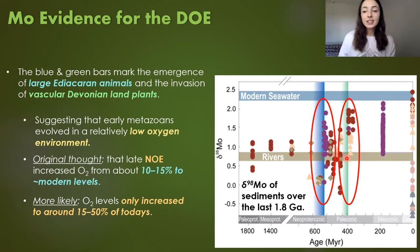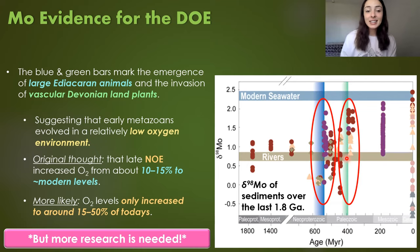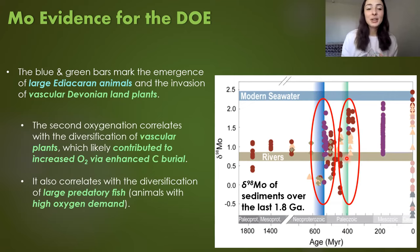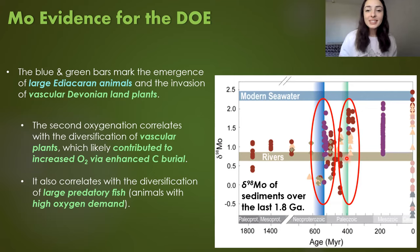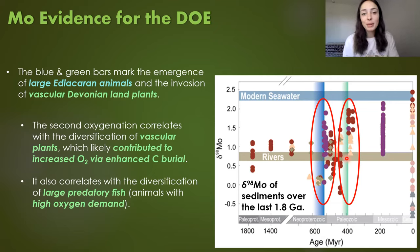This could be significant in studying those animals' functions and evolutionary history compared to animals that evolved post-Devonian oxygenation. More research is needed to understand the exact amount of oxygenation increase and what that means biologically and ecologically. Focusing on the DOE, the Devonian Oxygenation Event correlates with two major events: the major diversification of vascular land plants, which likely contributed majorly to oxygenation by enhancing carbon burial, and the diversification of animals with high oxygen demand such as large predatory fish.